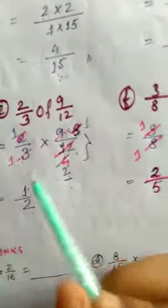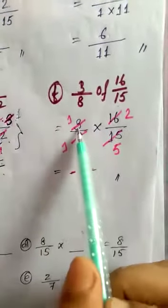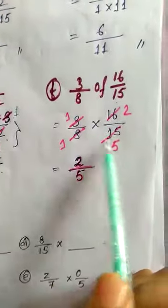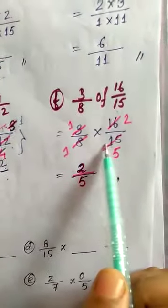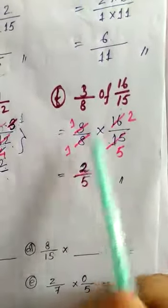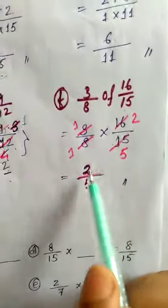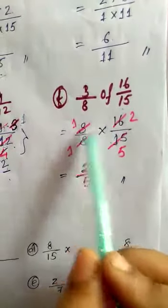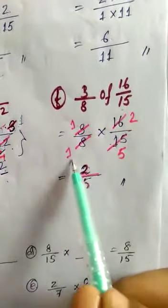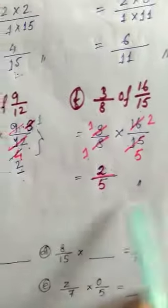Question 1f: 3/8 of 16/15. Here 3 and 15 have common factor 3 — 3 goes into 3 once, 3 goes into 15 five times. And 8 and 16 have common factor 8 — 8 goes into 8 once, 8 goes into 16 twice. So numerator is 1×2 = 2 and denominator is 1×5 = 5. The answer is 2/5.